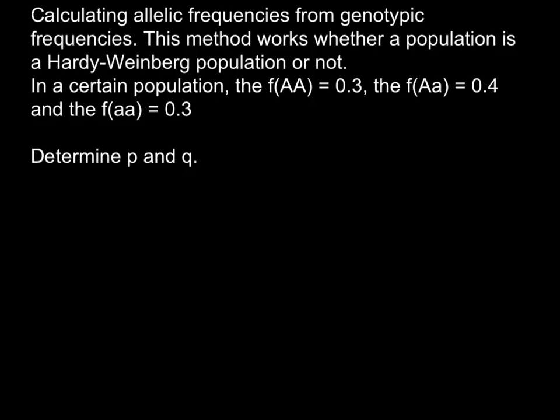Here is a problem. In a certain population, the frequency of the homozygous dominant f(AA) is 0.3, the frequency of the heterozygote f(Aa) is 0.4, and the frequency of the homozygous recessive f(aa) is 0.3. You have to determine p and q, the frequencies of these two alleles.